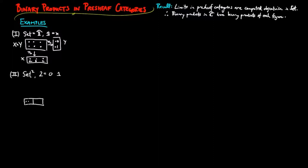For sets squared, given a container X with three and two elements in each compartment and a container Y with two and one elements in each compartment, the product of X and Y is the container with six — three times two — elements and two — two times one — elements in each compartment. Again, the projections are contractions vertically to X and horizontally to Y.